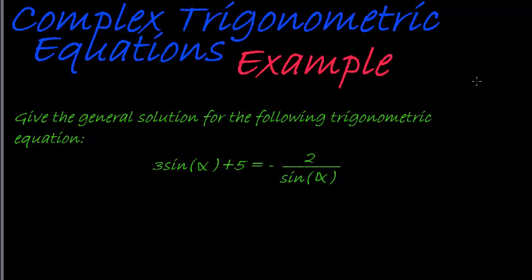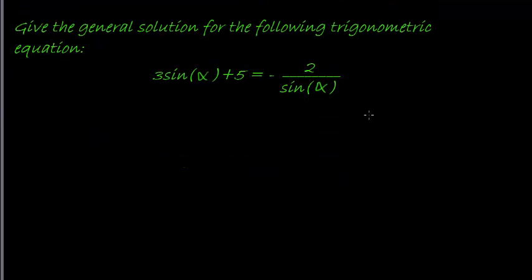Now, fractions usually complicate things a little bit, but the lovely thing about trigonometric equations, actually equations in general, is that we can get rid of fractions very easily. All we need to do is multiply with the lowest common denominator. Now here we only have one denominator, and that is sine of alpha. So we just multiply everything with sine of alpha.